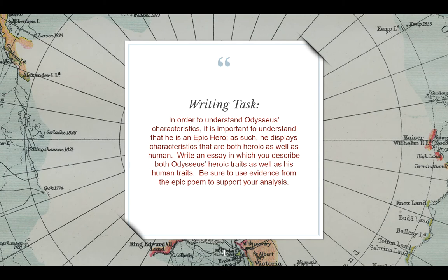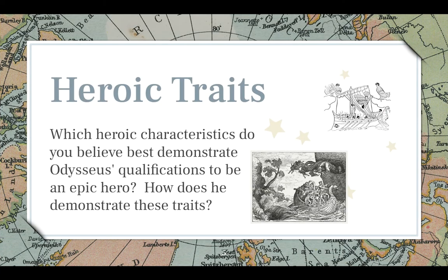So here is what the writing task will be. We want to focus our review of the Odyssey so we're getting the information we need for this task. In order to understand Odysseus's characteristics, it is important to understand that he is an epic hero. As such, he displays characteristics that are both heroic as well as human. Write an essay in which you describe both Odysseus's heroic traits as well as his human traits. Be sure to use evidence from the epic poem to support your analysis. We're looking at the very brave traits of Odysseus and also where he screws up, because he is human and gets himself into trouble.